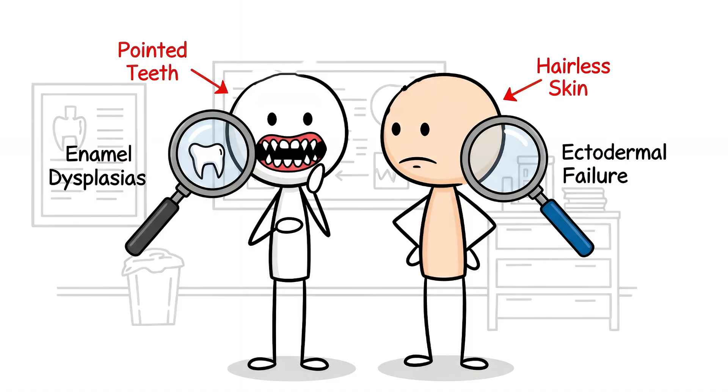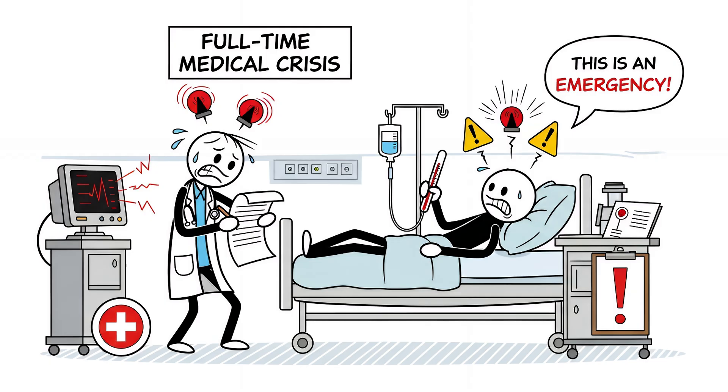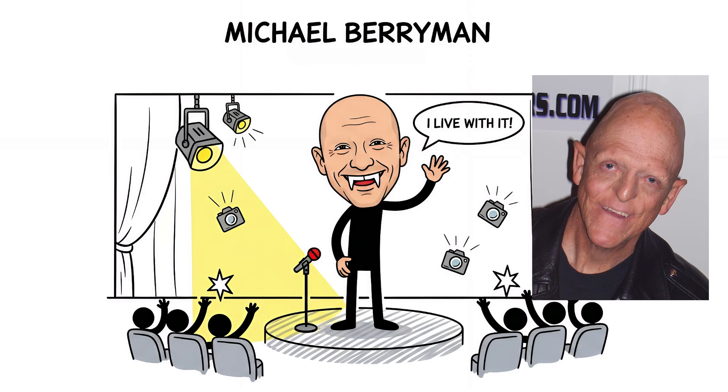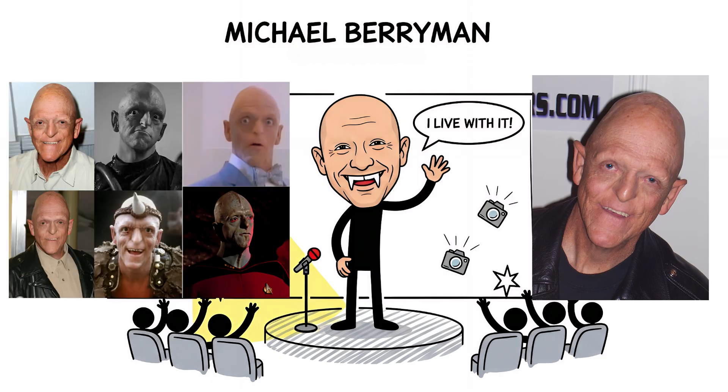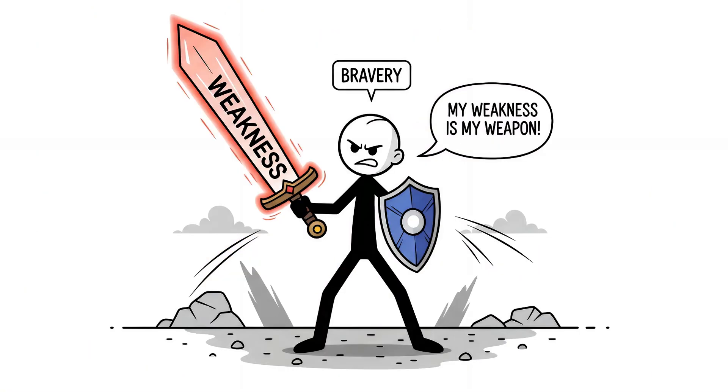The pointed teeth? Enamel dysplasia. The hairless skin? Ectodermal failure. Hollywood calls it the perfect monster aesthetic. In reality, it's a full-time medical emergency. Famous actor Michael Berryman has this disorder. Horror films typecast him as a monster. He became an icon by owning the spotlight anyway. Your weakness can be your weapon, if you're brave enough to wield it.